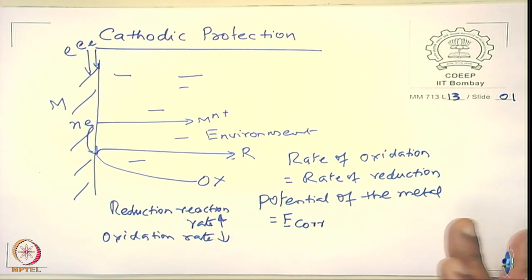We need to understand in more detail what factors control cathodic protection of a given metal. This we can understand by looking at the Evans diagram. We know how the Evans diagram can be constructed, so let us construct the Evans diagram.